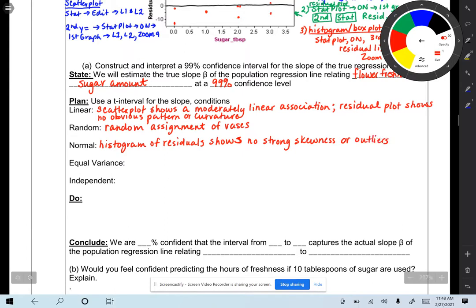For the equal variance, scatter is pretty even from the zero line of the residual plot.